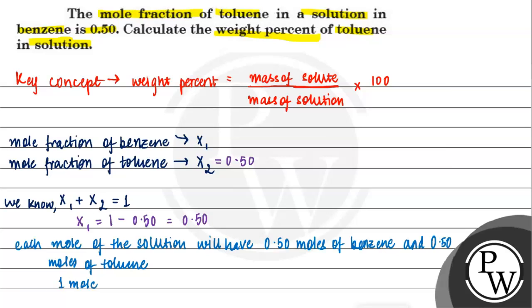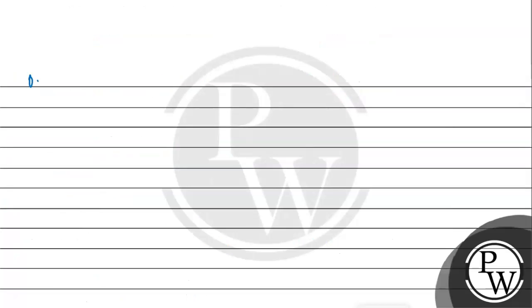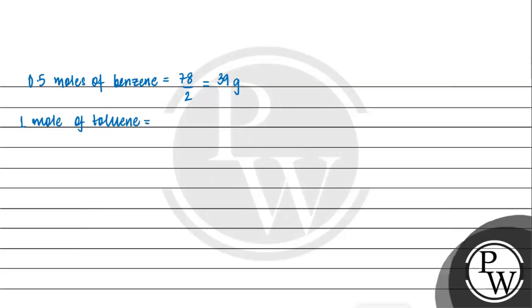Now we know 1 mole of benzene. Benzene's molecular formula is C6H6, so it will be 78 grams. So 0.50 moles of benzene will be equal to 39 grams. Similarly, we will calculate for toluene. 1 mole of toluene will have 92 grams, so 0.50 moles of toluene will be equal to 46 grams.